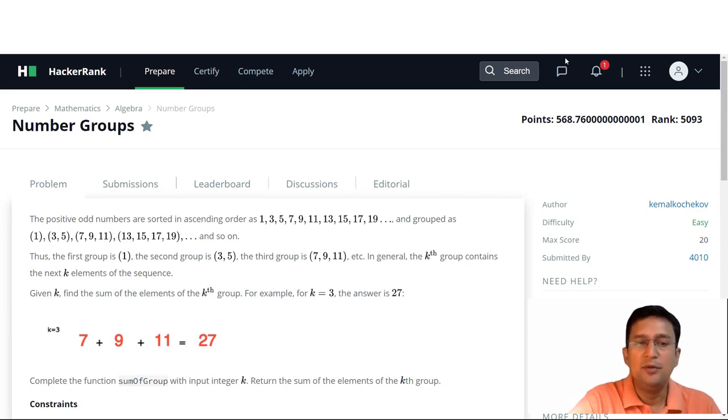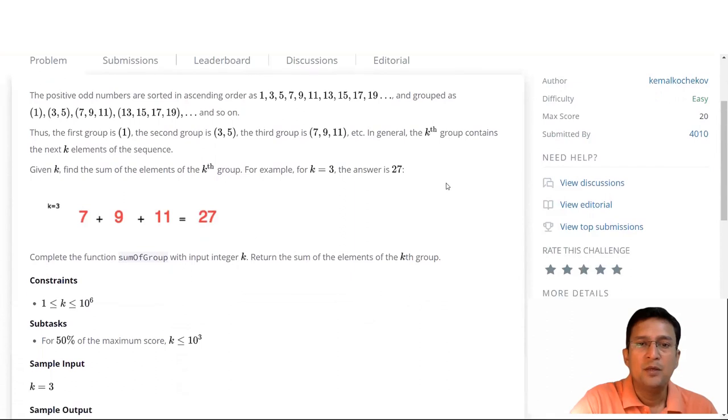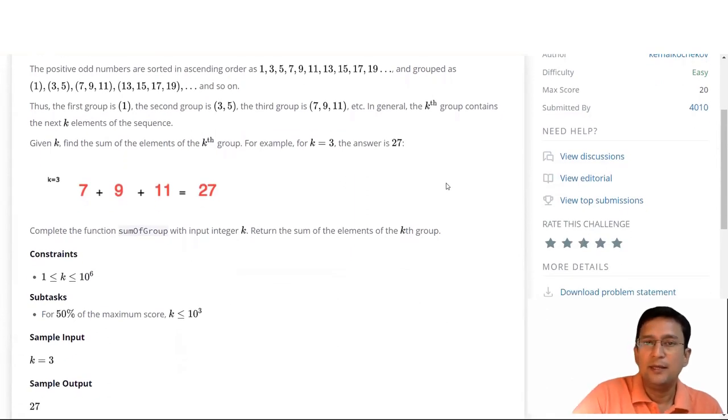If you look at the second group, it's three or five, three plus five is eight. For the fourth group, thirteen plus fifteen plus seventeen plus nineteen equals sixty-four.